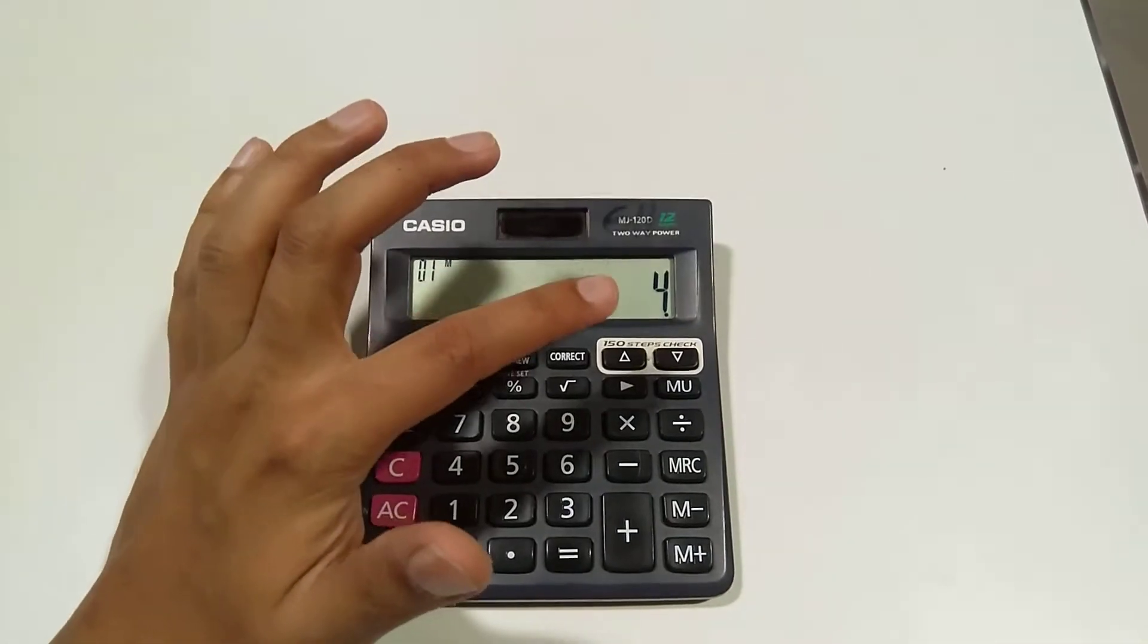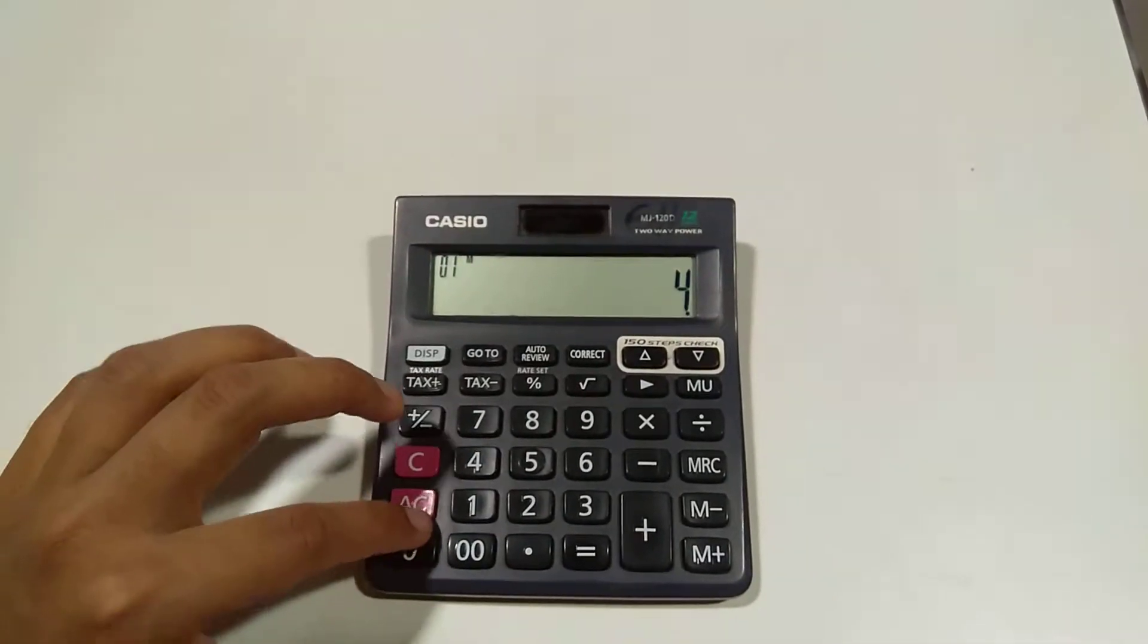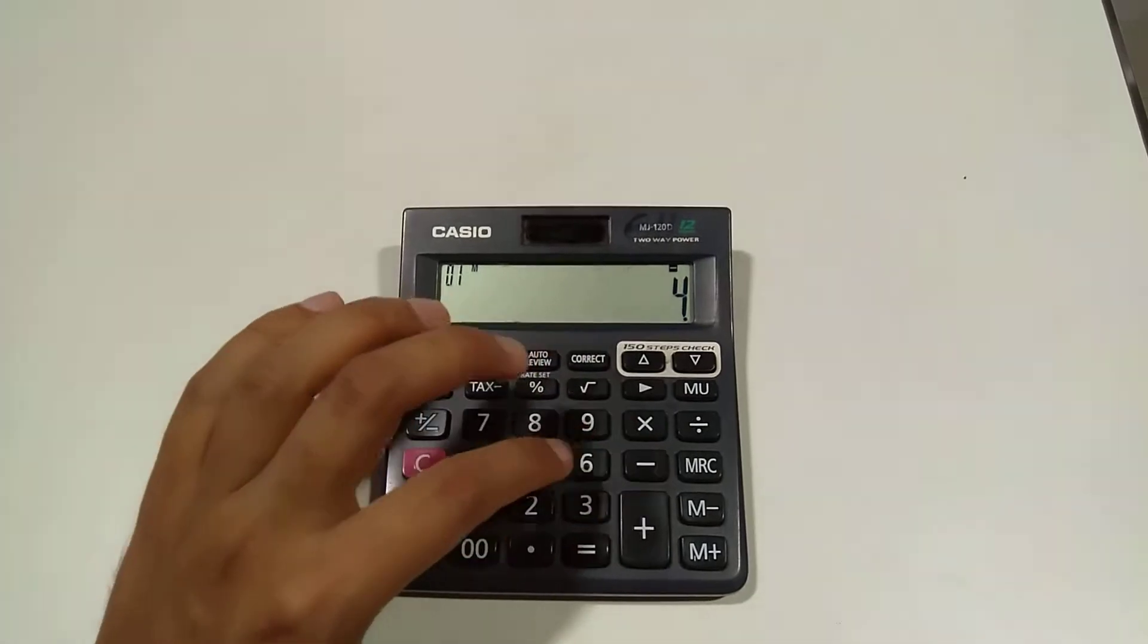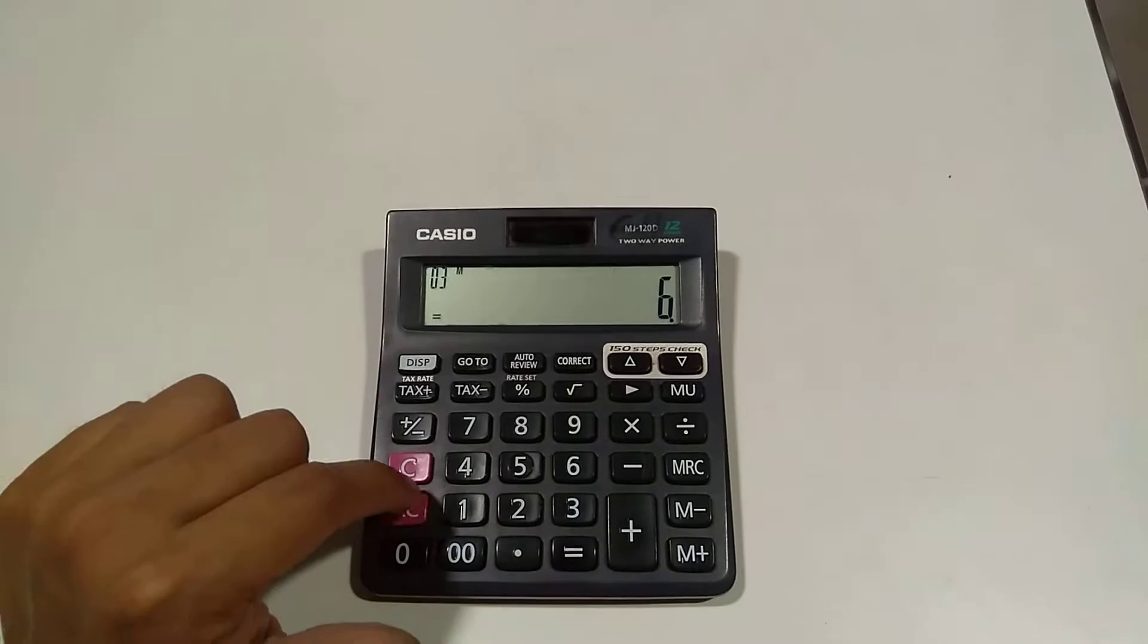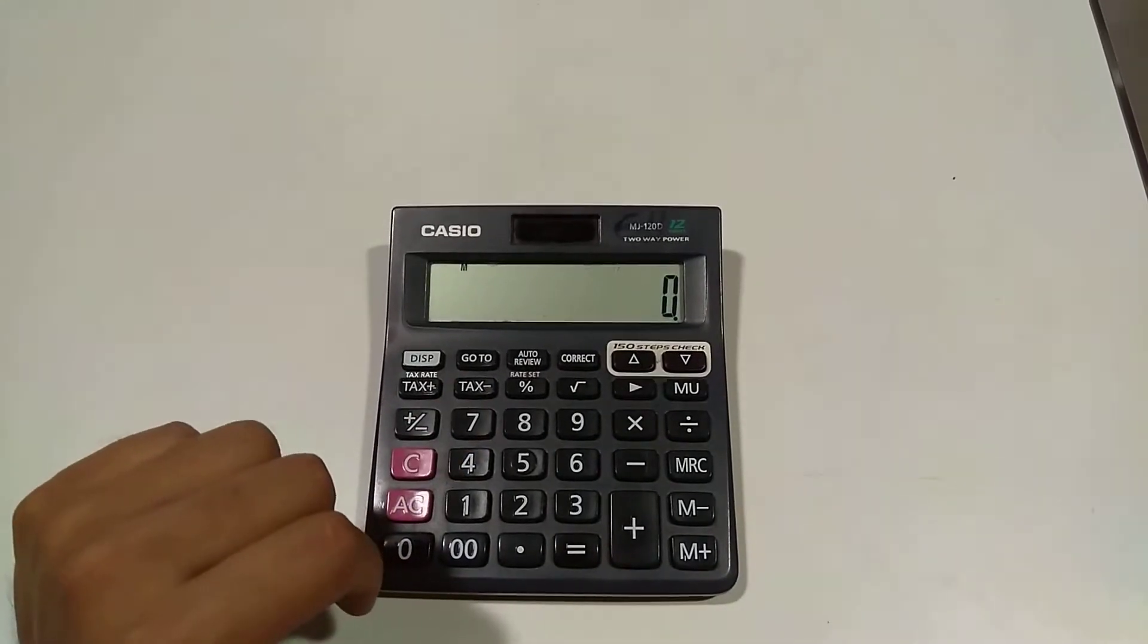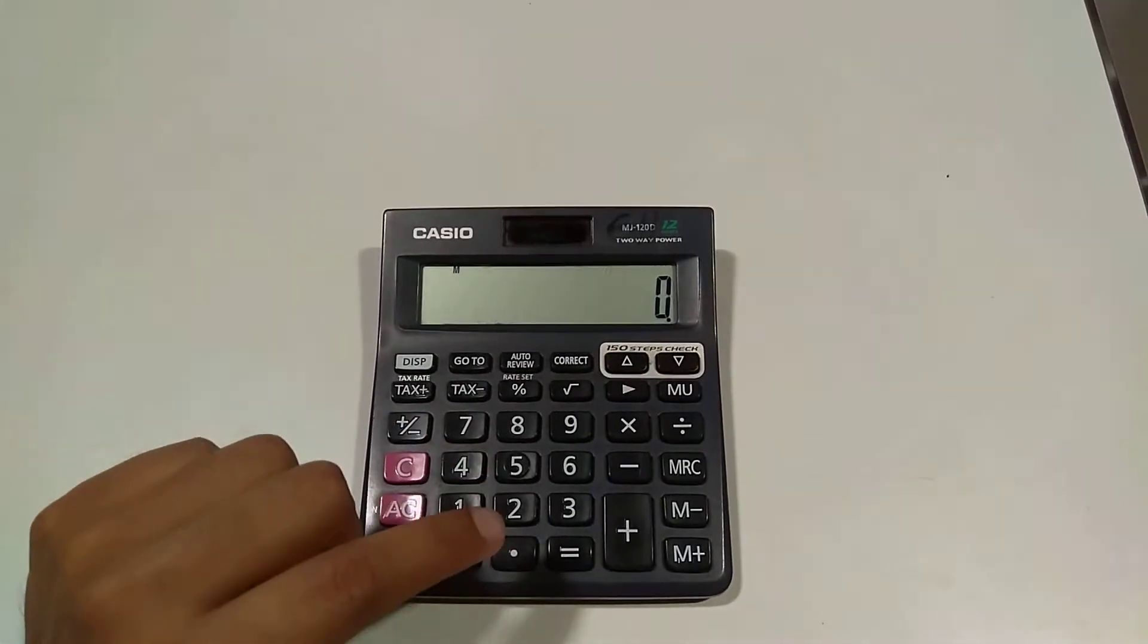For example, if we do 4 minus then we have to add plus then 2, our answer will be wrong because the value starts from 4 and we try to do it wrong.